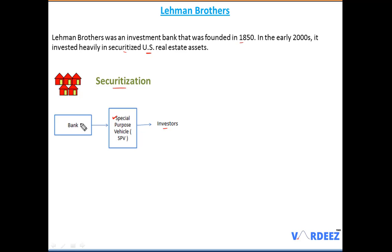The investors are buying these bonds, so effectively the bank is simply a mediator — they give out loans, pool them, transfer them to the SPV, and get their money back quickly. This is a good process for the bank overall. They can then give out new home loans to new borrowers, pass it on to the SPV again, and keep on repeating that cycle. Lehman Brothers were very much into this securitization of the US real estate markets.